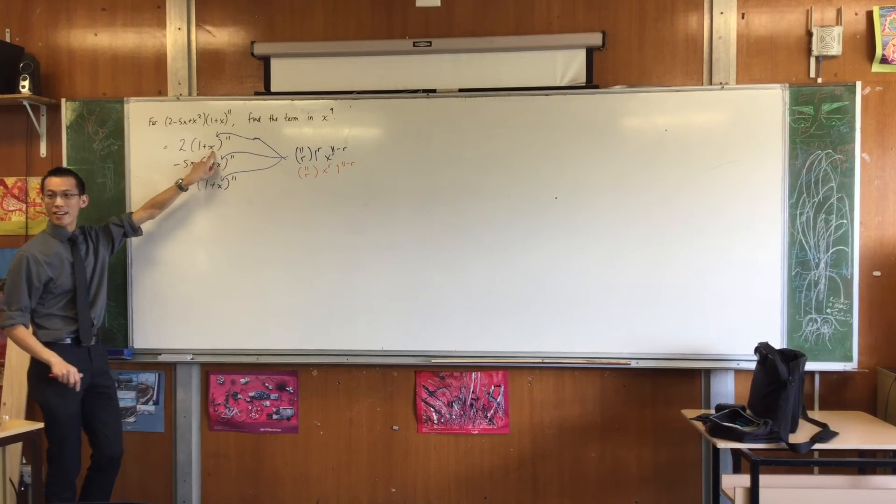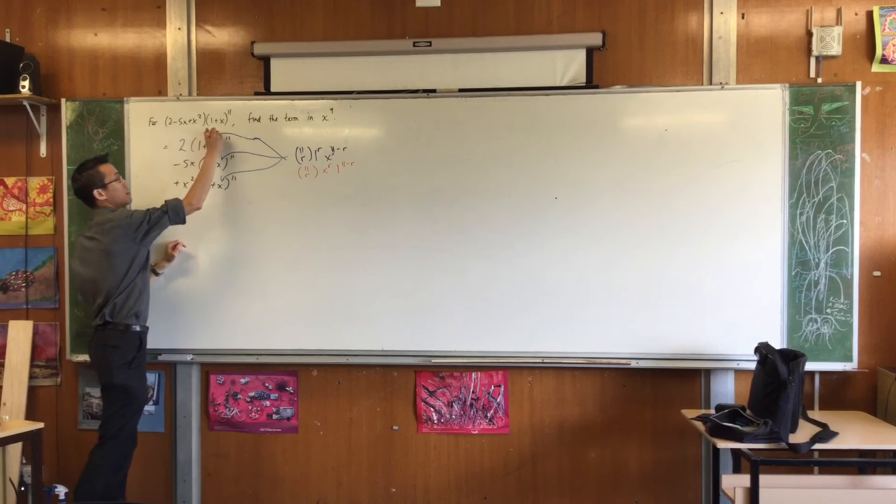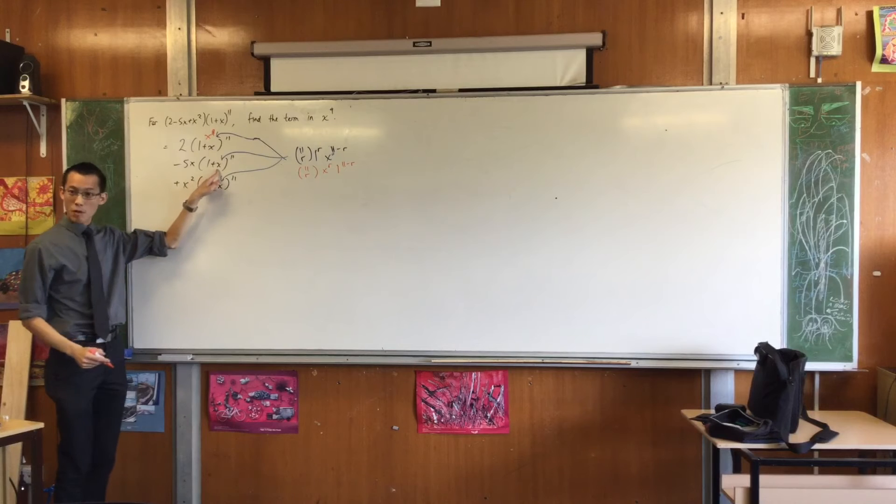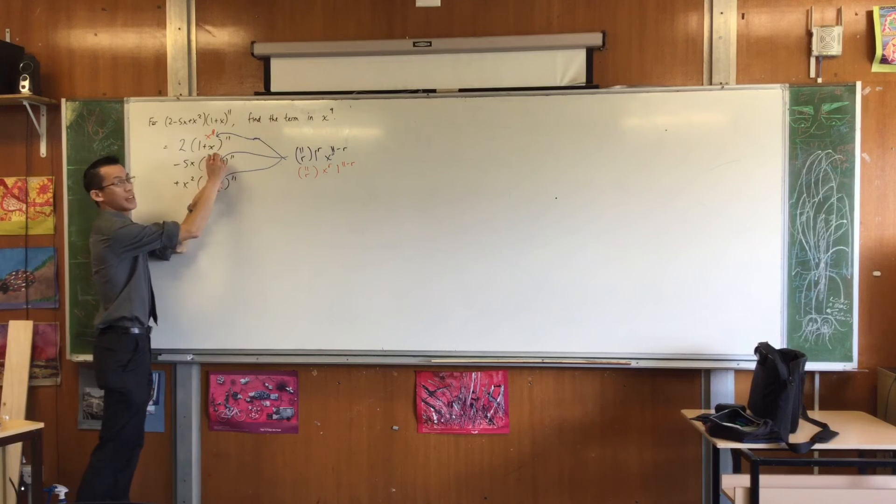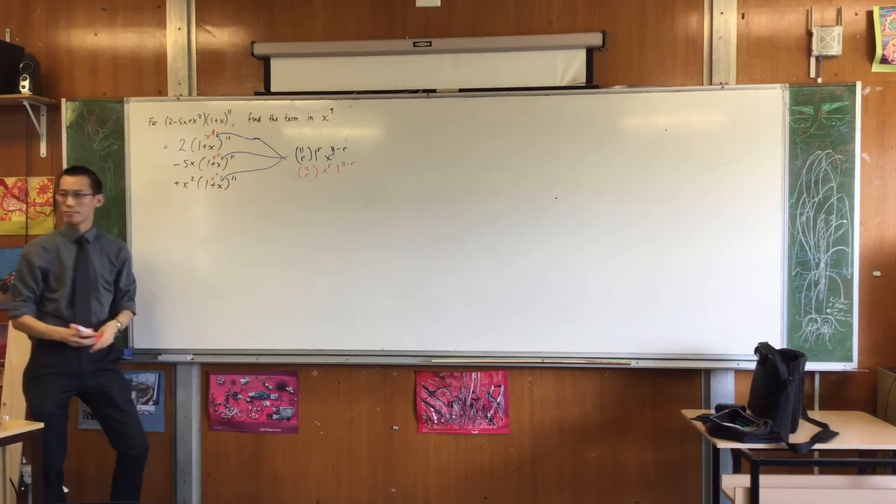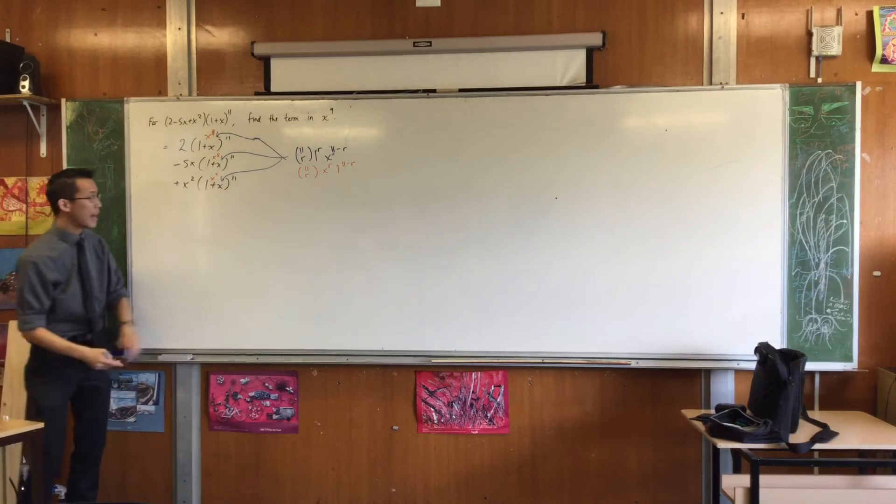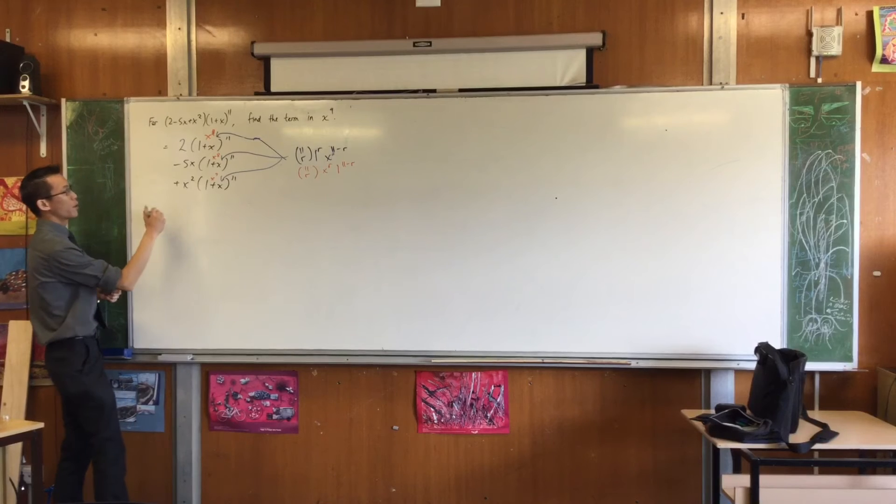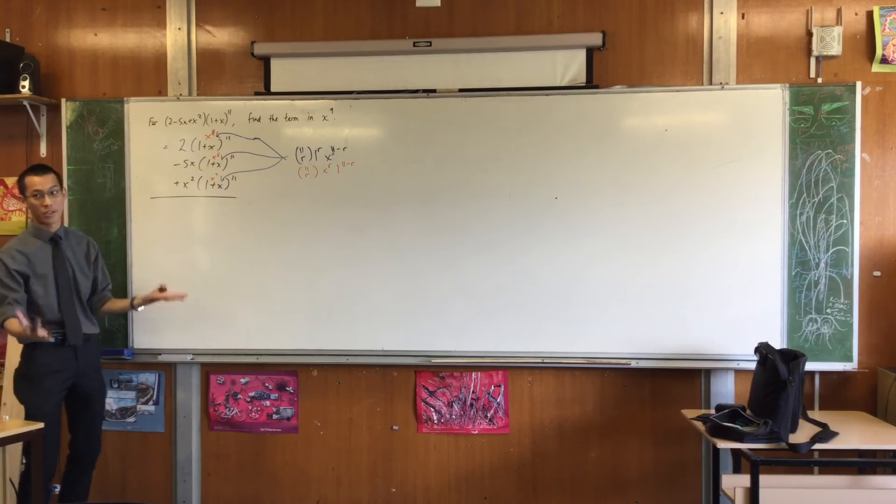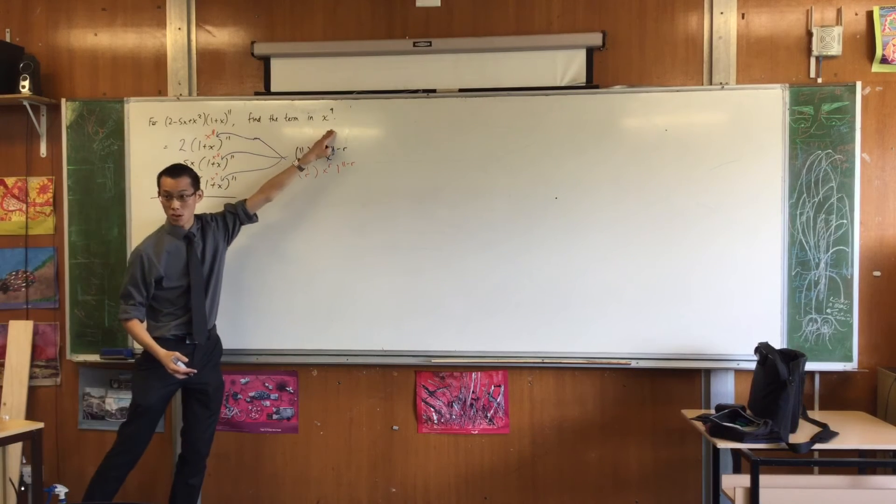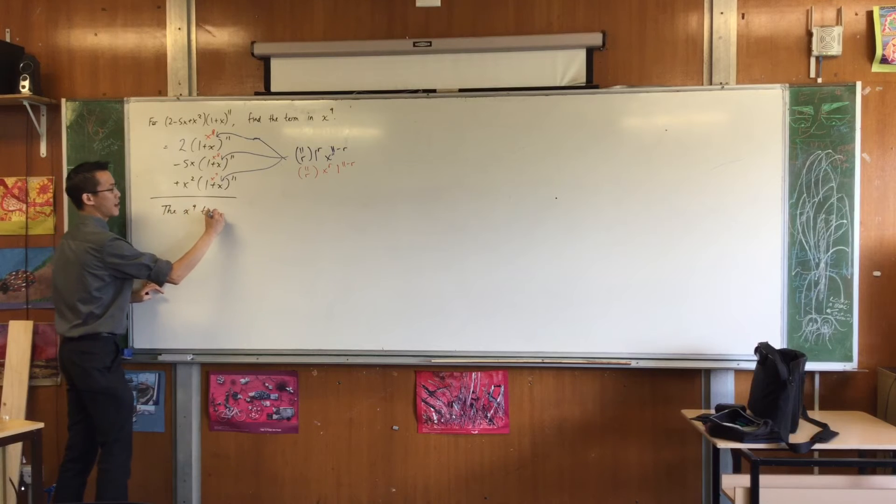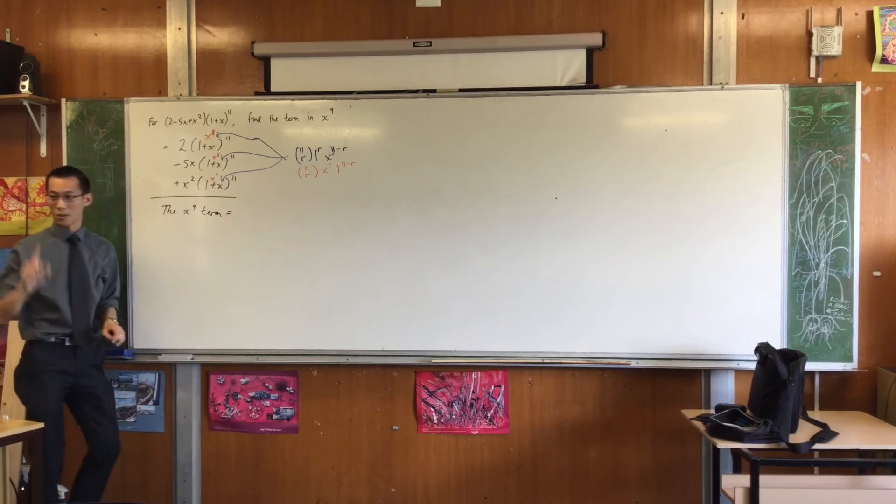So in this bracket, I want the x to the 11 term? 9, sorry. Wrong power. Right here. In this bracket, I want the x to the 8 term, and in this bracket, I want the x to the 7 term. So therefore, I can pull the fall out right now. Watch. I'm going to stop writing equals, because the thing I'm going to write next is not all the terms. It's not the whole expansion. It's just the ones that I want.